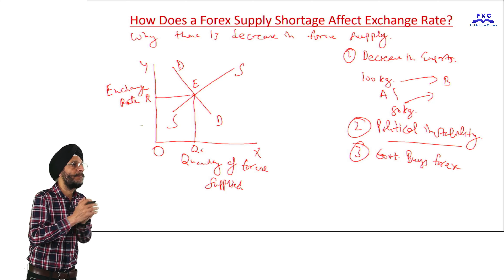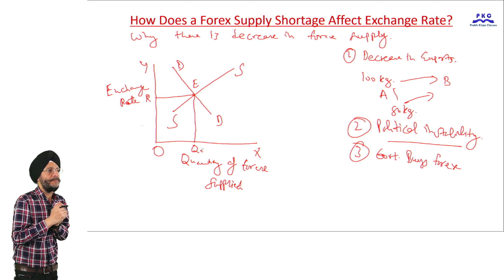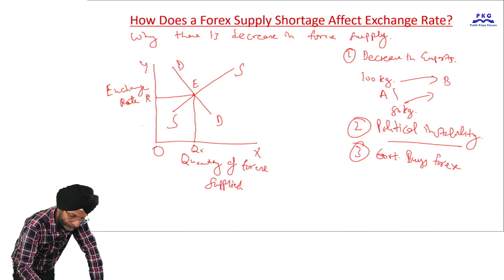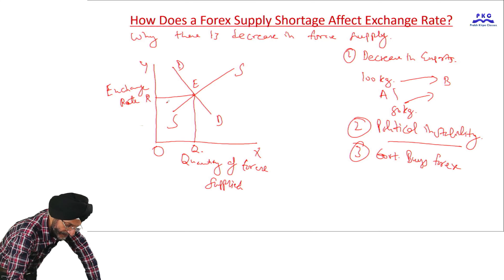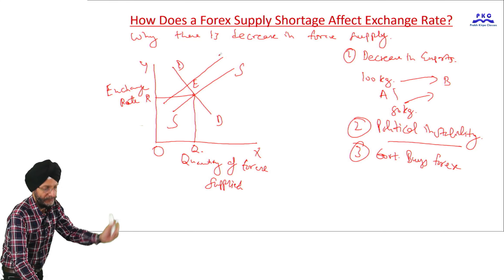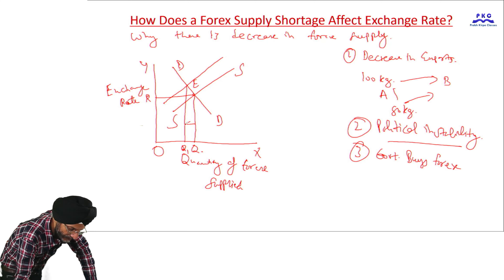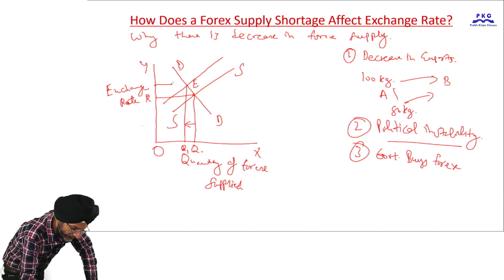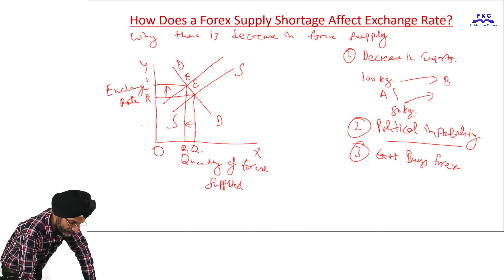Now, if the supply of foreign exchange decreases, what happens? If the supply decreases, it means the supply curve shifts upward or to the left. The new quantity supplied becomes OQ1. The equilibrium point also shifts upward and the exchange rate also shifts upward.